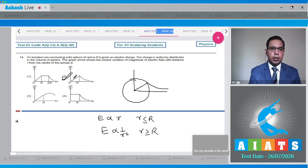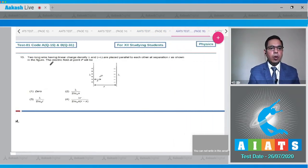Now move to question number 15, which states that two long wires having linear charge density lambda and minus lambda are placed parallel to each other at separation r as shown in the figure. Electric field at point p will be? Here lambda is given and minus lambda is given. We know that electric field due to a long wire is equal to lambda upon 2 pi epsilon naught r. Here this distance is x, then this distance will be equal to r minus x.